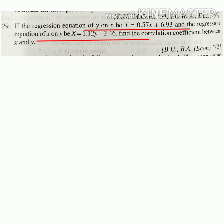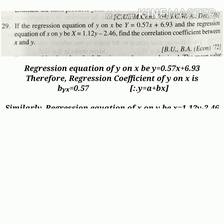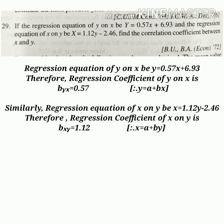Let's check out the first problem. The two regression equations of y on x and x on y are given, and you will have to find out the correlation coefficient between x and y. The regression equation of y on x is given as y = 0.57x + 6.93. Therefore, the regression coefficient of y on x, that is byx, is just the coefficient of x on the right, which is 0.57.